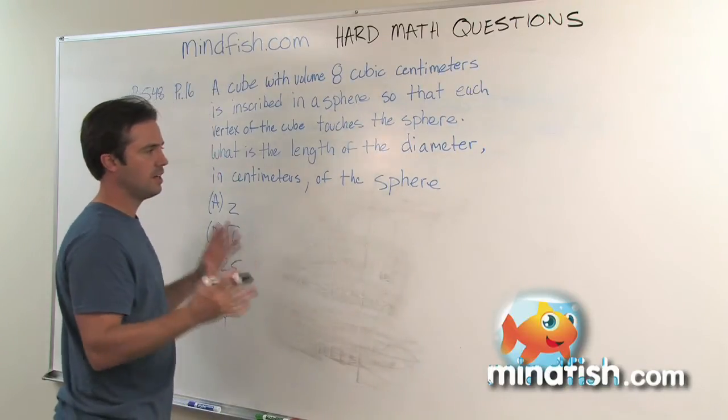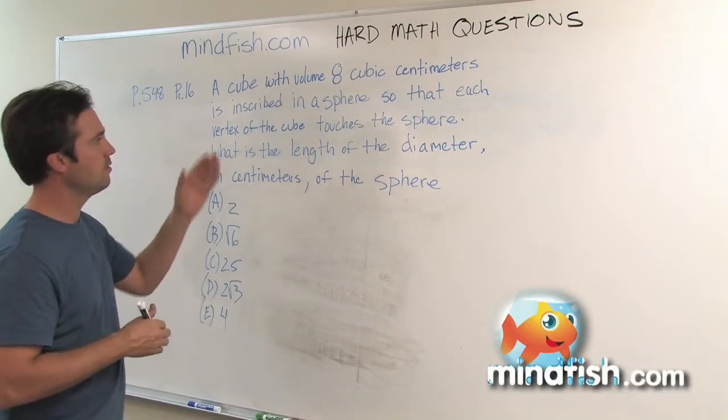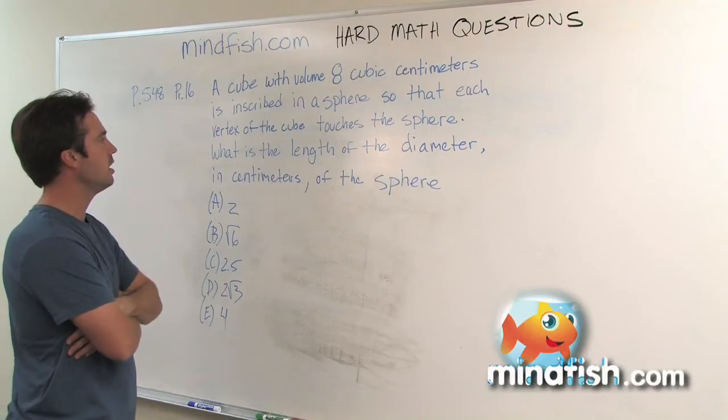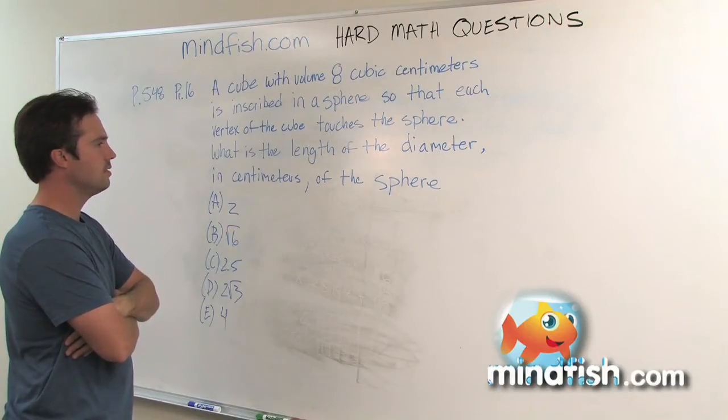But before we jump into that, let's just look at the question and understand what we're dealing with here. A cube with a volume of eight cubic centimeters is inscribed in a sphere so that each vertex of the cube touches the sphere. What is the length and diameter of the sphere?